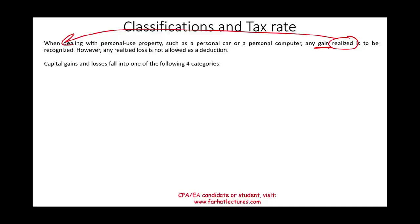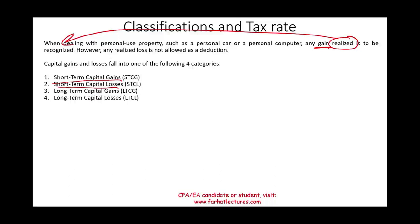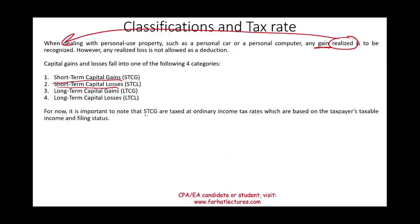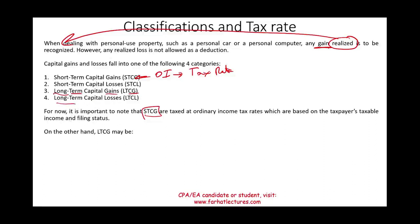Capital gains and capital losses fall into four categories. Short-term means held 12 months or less; long-term means held more than 12 months. Short-term capital gain is treated as ordinary income and taxed at your individual tax rate — the same as wages, which is the highest rate. Long-term capital gains, on the other hand, are potentially subject to preferential rates.